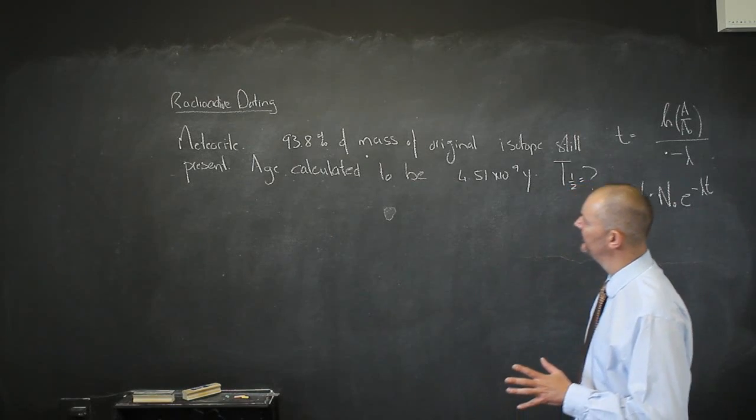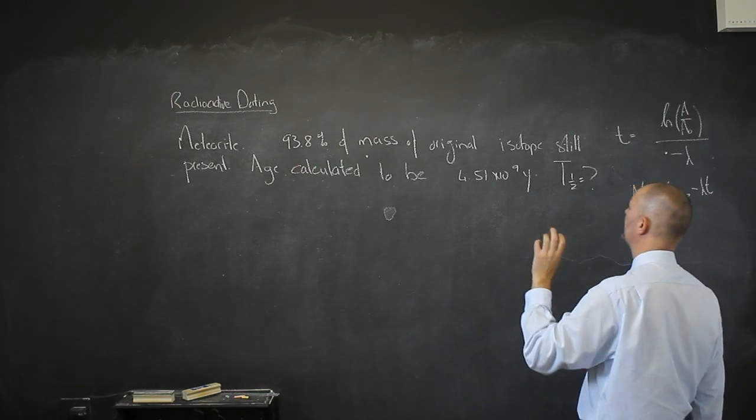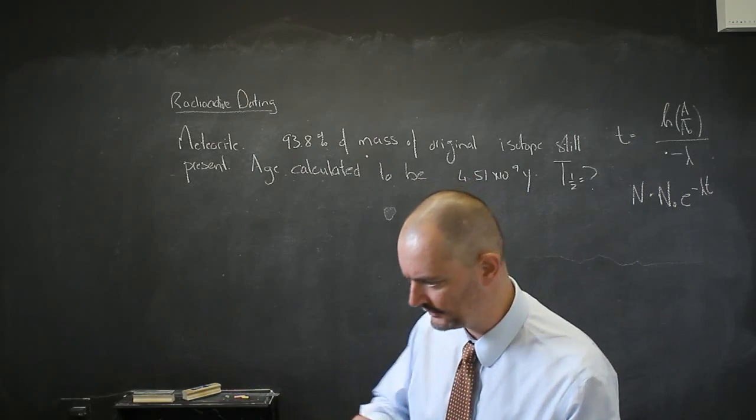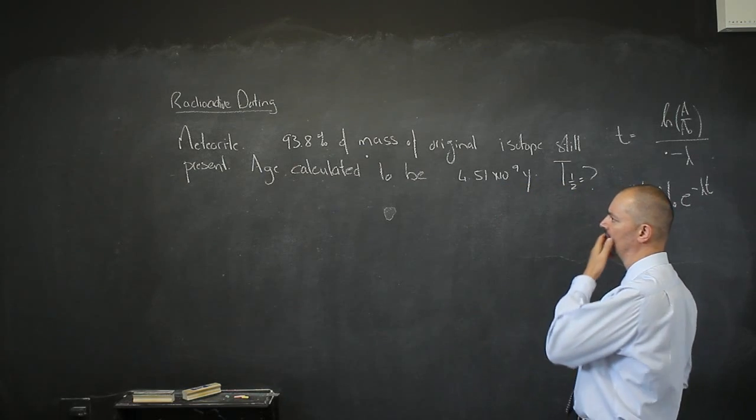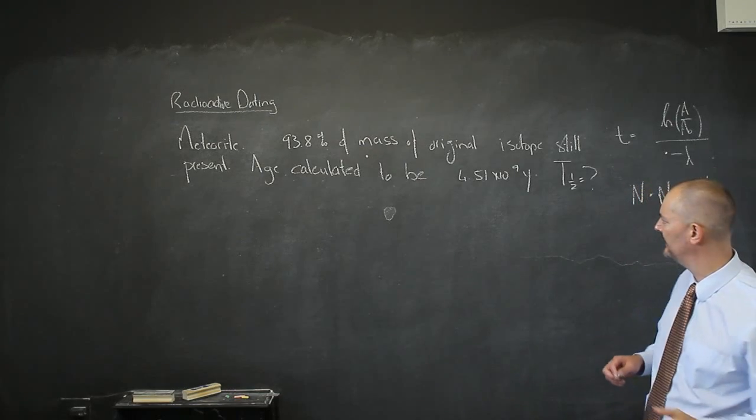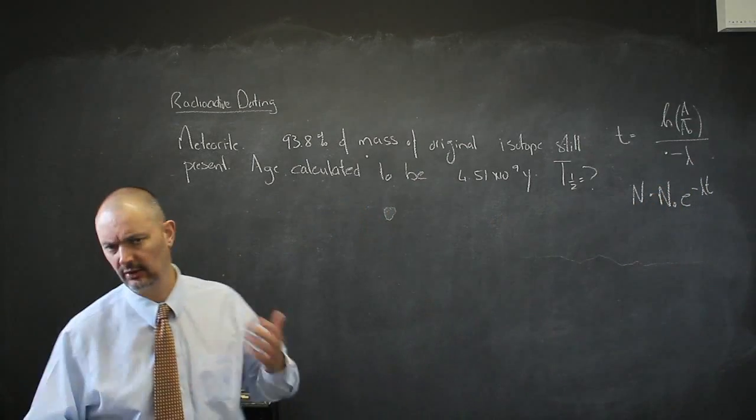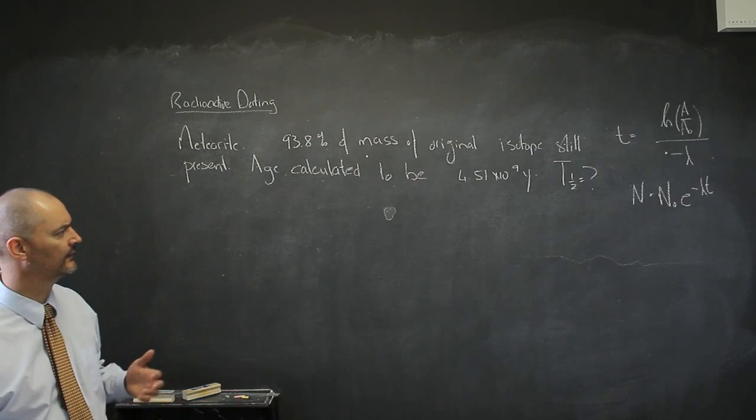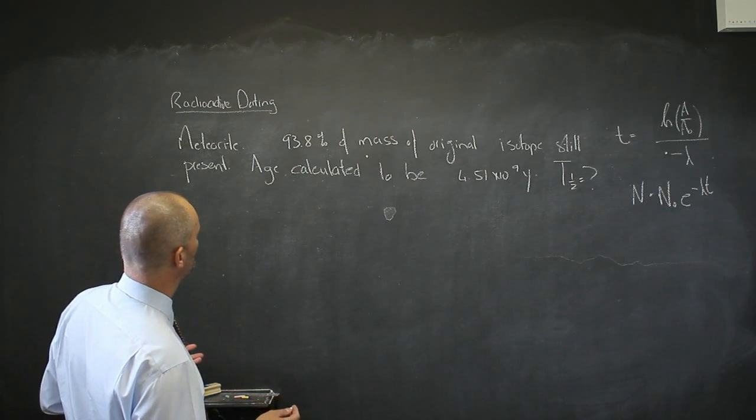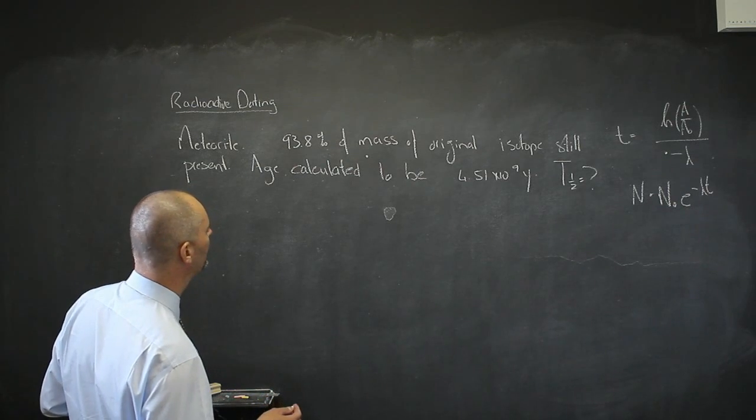Here we have a meteorite. We know that 93.8% of the mass of the original isotope is still present. We calculate the age of this meteorite to be 4.51 times 10^9 years. What is the half-life of the radioisotope? This is a convoluted problem, just to see if you can do some algebra with the equations you know. Is it realistic? Are you going to deal with it in day-to-day life? No.